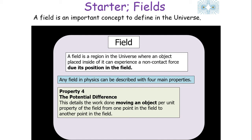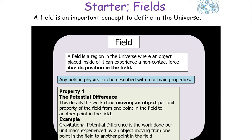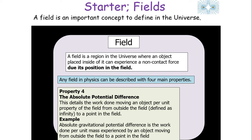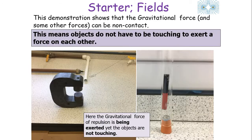Property 4 is the potential difference, which details the work done moving an object per unit property of the field from one point in the field to another. Gravitational potential difference is the work done per unit mass by an object moving from one point in the field to another. The absolute potential difference details the work done moving an object per unit property from outside the field — defined as infinity — to a point in the field.